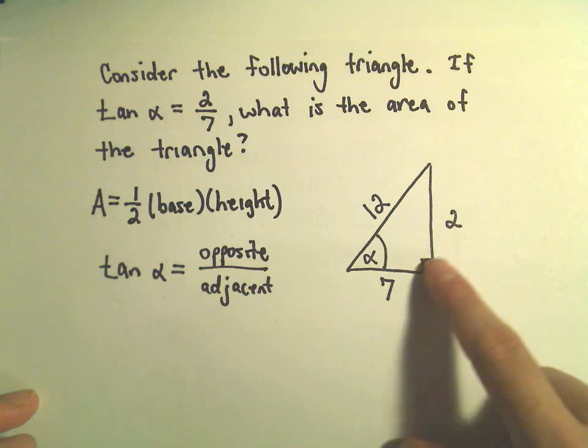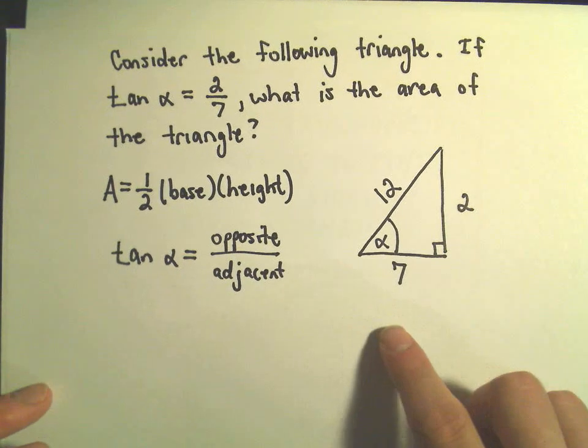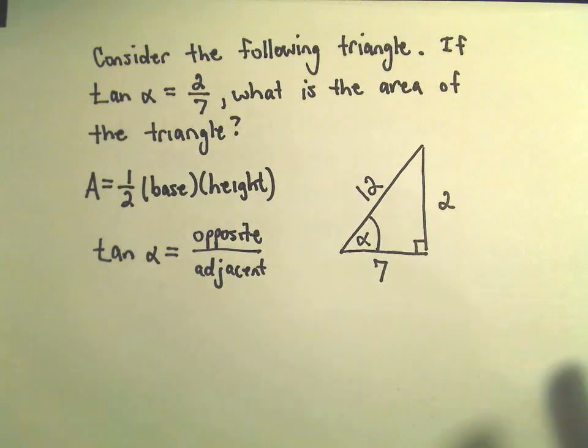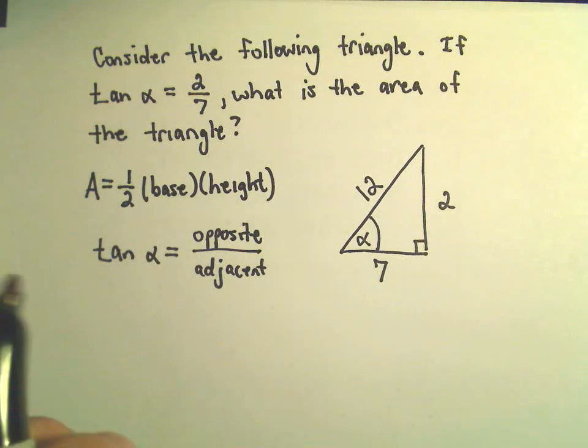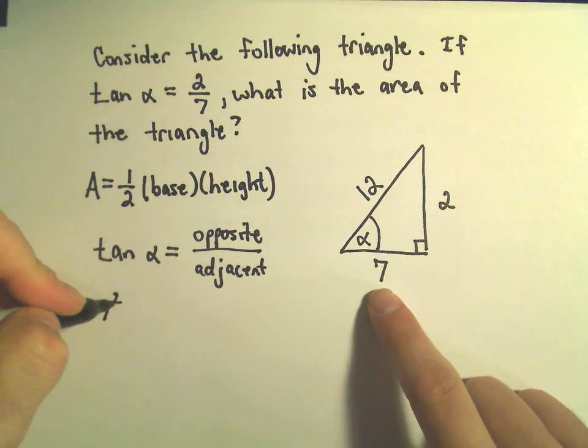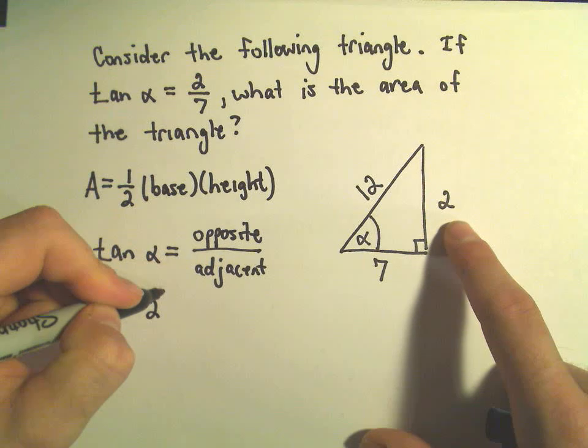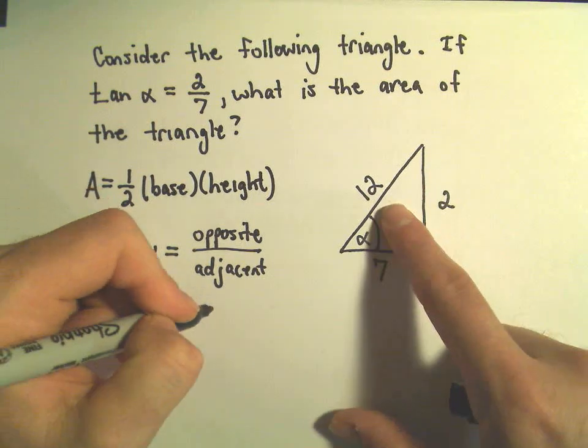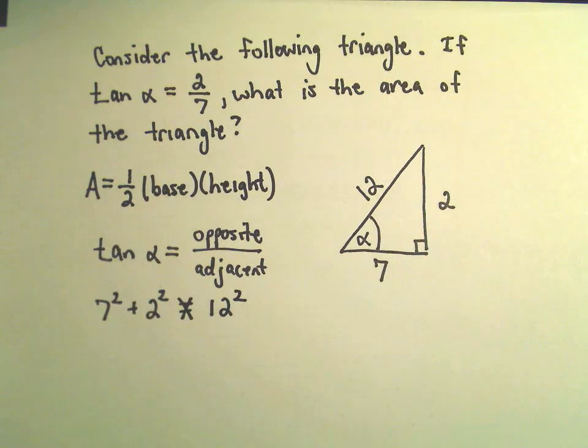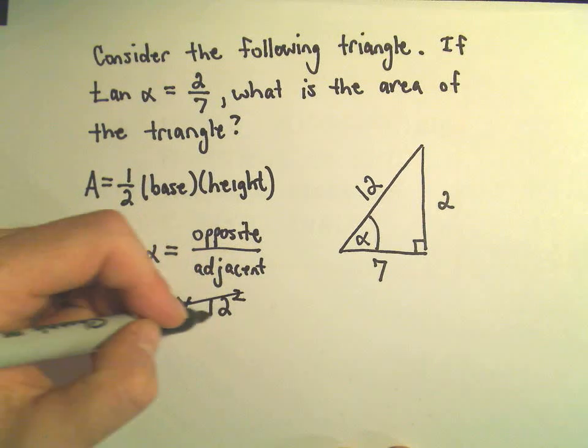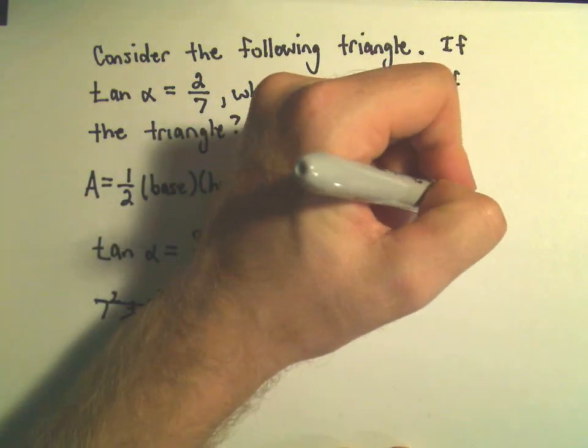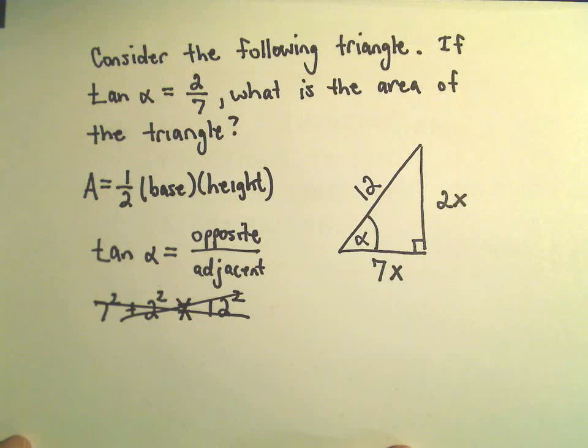Certainly that would give us a ratio of 2 over 7, but notice this isn't going to be a right triangle at all anymore. You can check doing Pythagorean theorem. I mean if we do 7 squared plus 2 squared, that's not going to equal 12 squared. Okay, so this can't be a right triangle, but the idea is what I can do is I can just multiply it by some unknown quantity x.